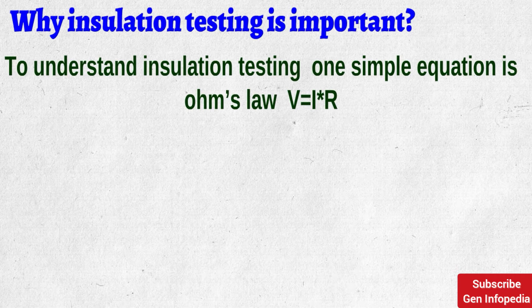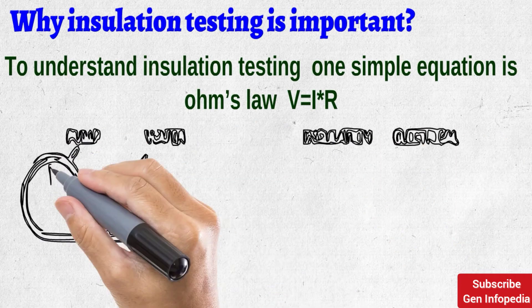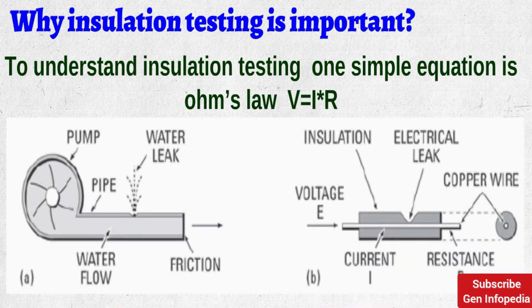To understand insulation testing, one simple equation is Ohm's Law: V = I × R. If the resistance of the insulation material increases, it automatically resists the current and keeps it in its path along the conductor. But if the resistance of the insulator decreases, there is some leakage current between the conductor and ground — as shown in figure A.